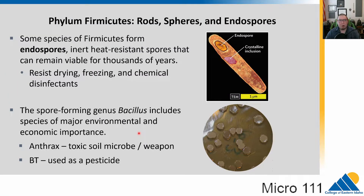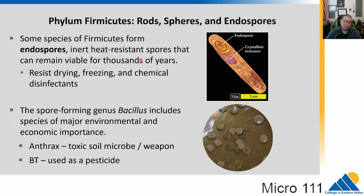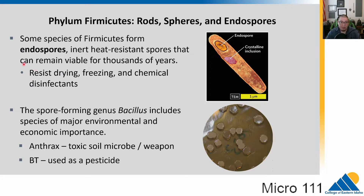Let's talk about the firmicutes first. In this group we have rod-shaped bacteria, spherical bacteria, and several endospore formers. Remember, those endospores are the heat-resistant structures that can be viable for thousands of years. We had the amber where we drilled out and found bacteria in the mosquito gut and were able to culture it from there. These endospores are really resistant to drying out, freezing, and even some chemical disinfectants.